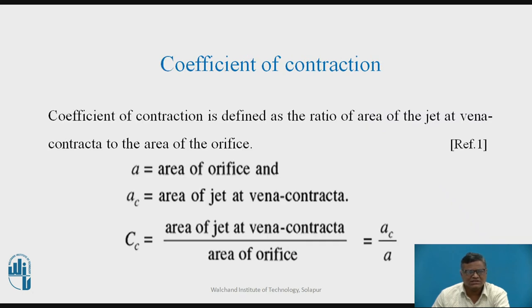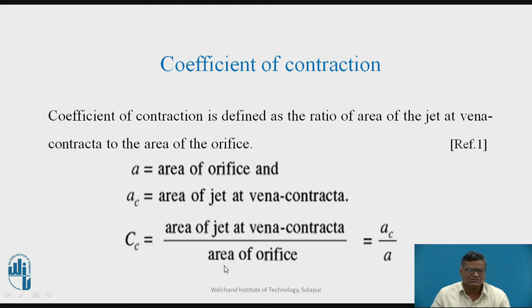Now let us go for the second coefficient, which is the coefficient of contraction. Due to the sharp edge of the orifice, the jet gets contracted in diameter, and the cross-section area of the jet is smallest at the vena contracta zone. The coefficient of contraction is the ratio of the area of the jet at vena contracta to the area of the orifice.